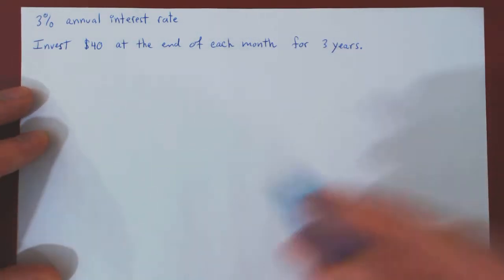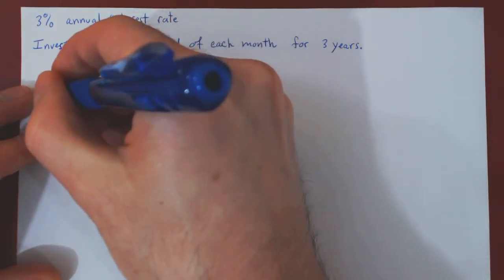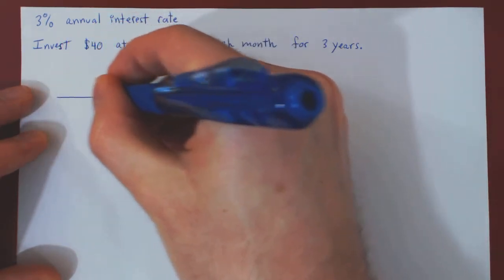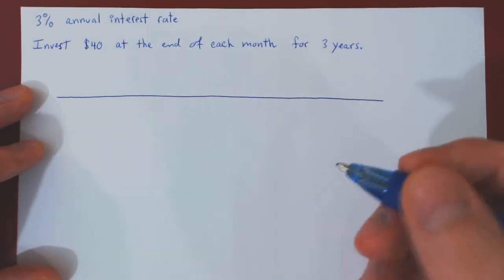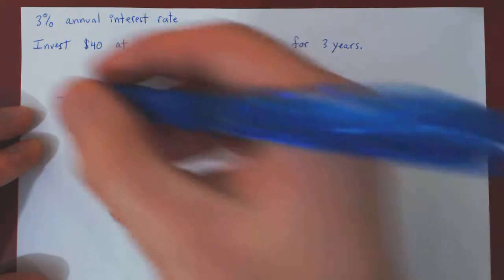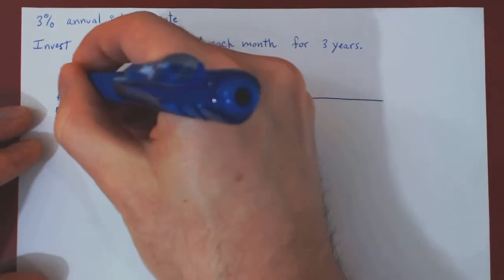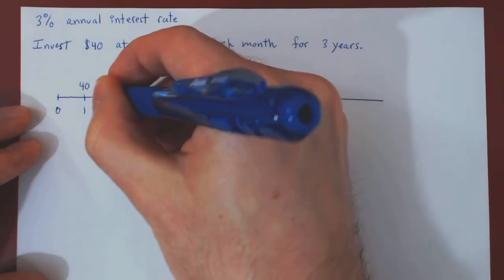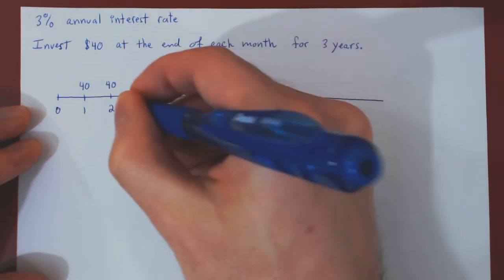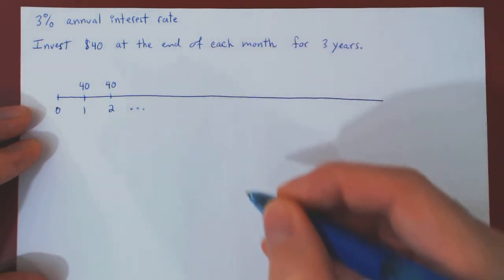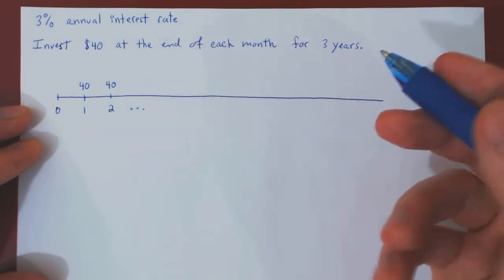As always, let's visualize these investments on a simple timeline. As we're investing at the end of each month, the markers will not be in years but in months. So at the end of the first month, we invest $40. At the end of the second month, we invest $40 again, and so forth.